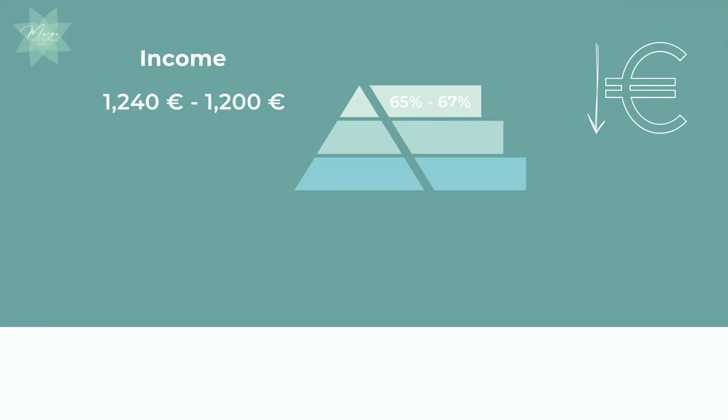The minimum amount for Parental Allowance Plus is 150 euros and the maximum is 900 euros. For low-income earners, the percentage you receive as parental allowance is a little bit different. It is considered low-income if you receive less than 1,250 euros per month. This percentage increases the less you receive. If your income was between 1,240 euros and 1,200 euros, the percentage increases step-by-step from 65% to 67% as your income decreases.